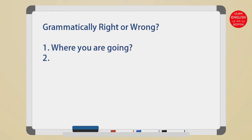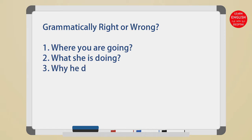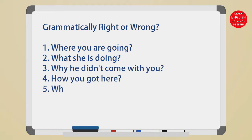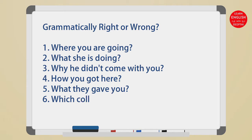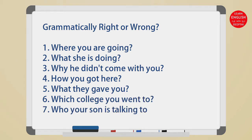Where you're going. What she is doing. Why he didn't come with you. How you got here. What they gave you. Which college you went to. Who your son is talking to.